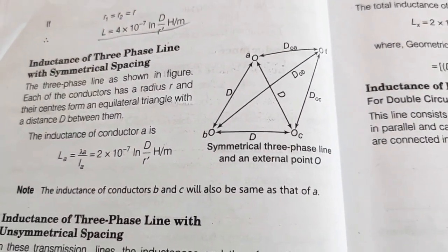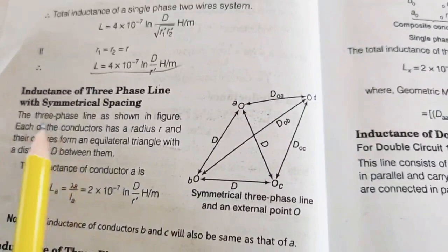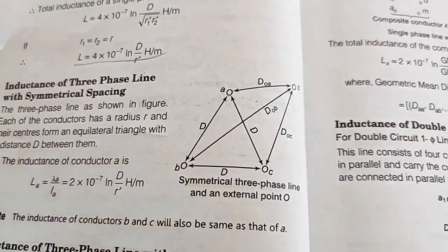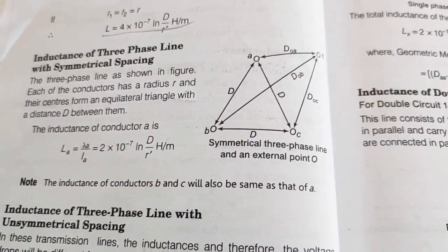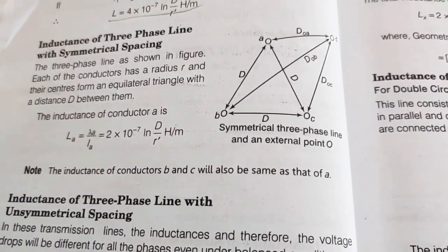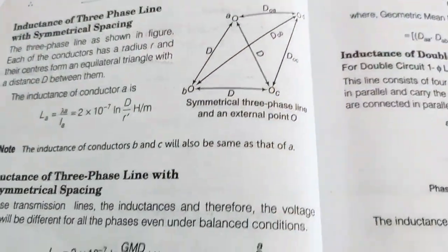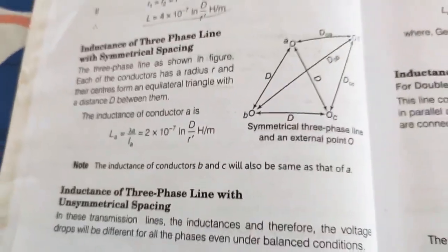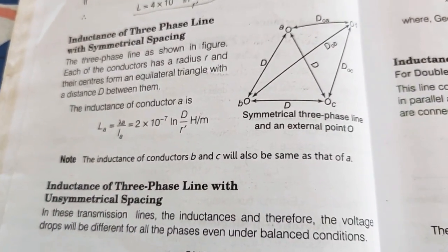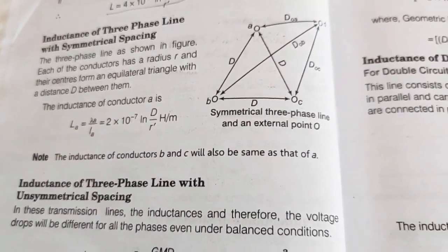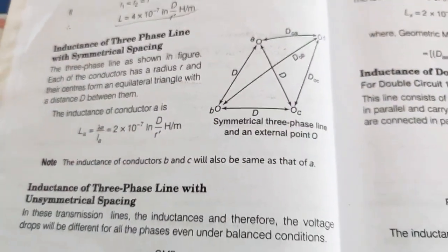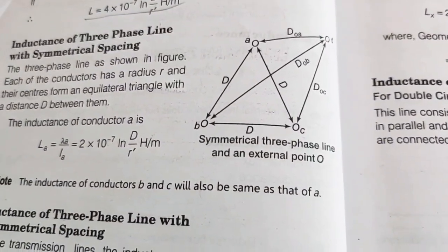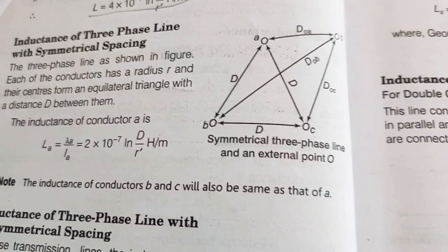For inductance of a three-phase line with symmetrical spacing, the three conductors each of radius R form an equilateral triangle with distance D between them. Inductance of conductor A: L-A equals 2 into 10 to the power minus 7 times ln(D/R-dash) Henries per meter. The inductance of conductors B and C are also the same as that of A.